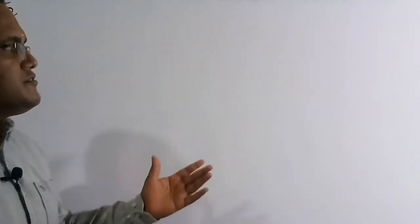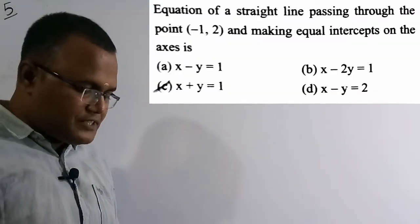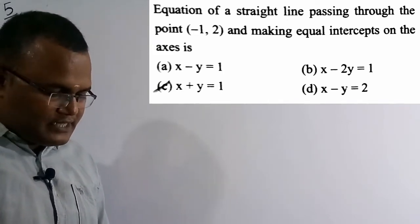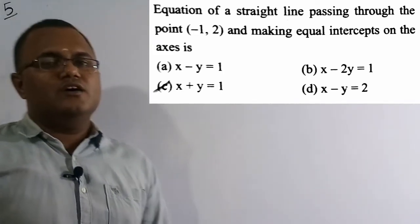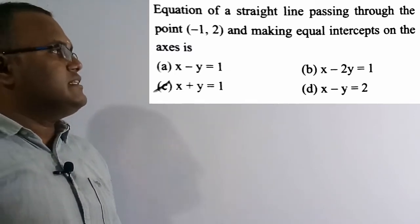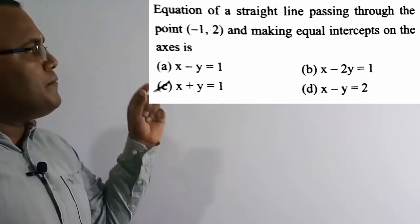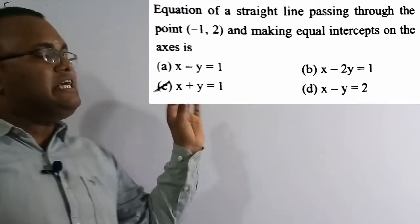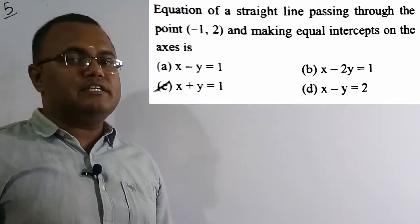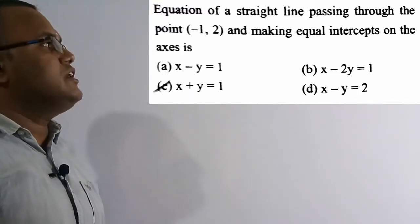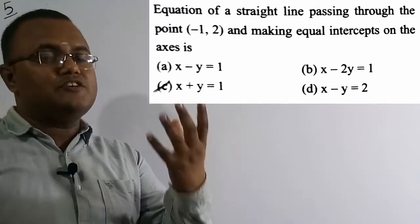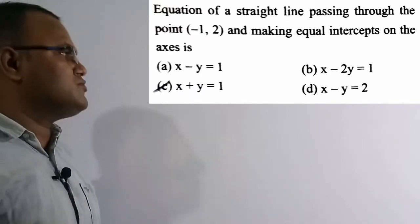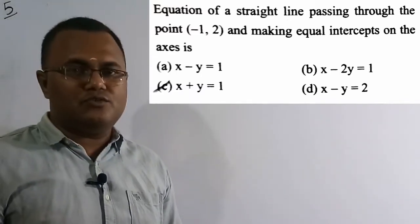The fifth question: find the equation of a straight line passing through (−1, 2) and making equal intercepts on both axes. Option C is correct: x + y = 1.